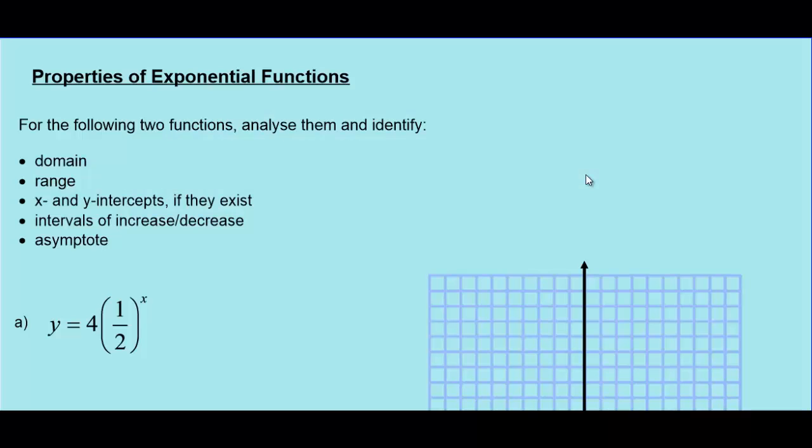For this lesson, we're going to look a little bit more in depth at some properties of exponential functions. We're going to look at their graphs and figure out things like: what are the domain and range of exponential functions? Do they have any x or y intercepts? What are their intervals of increase or decrease? And do they have any asymptotes or not? We're also going to use Desmos to help us illustrate some of these key properties.